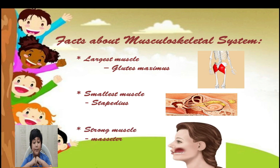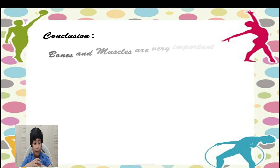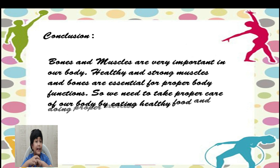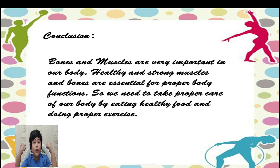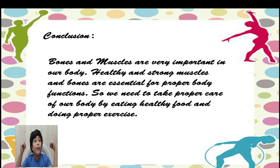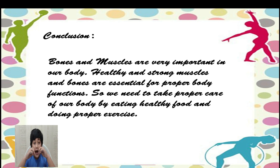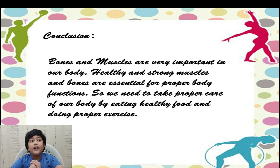The strongest muscle in our body is the muscle present in our jaw. Bones and muscles are very important in our body — if they get damaged, it impacts our body movements. So healthy and strong bones and muscles are essential for proper functioning of our body. We should eat calcium-rich food to strengthen our bones — for example, dairy products, broccoli, fish. Even exercise helps us to strengthen our bones and muscles. The musculoskeletal system works for us for a lifetime, and it is our responsibility to take care of them.